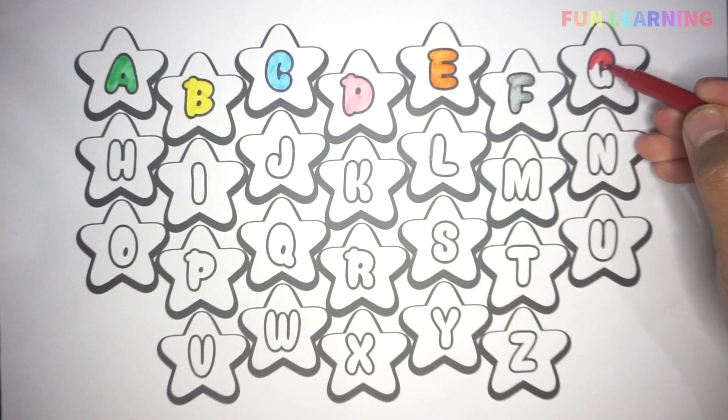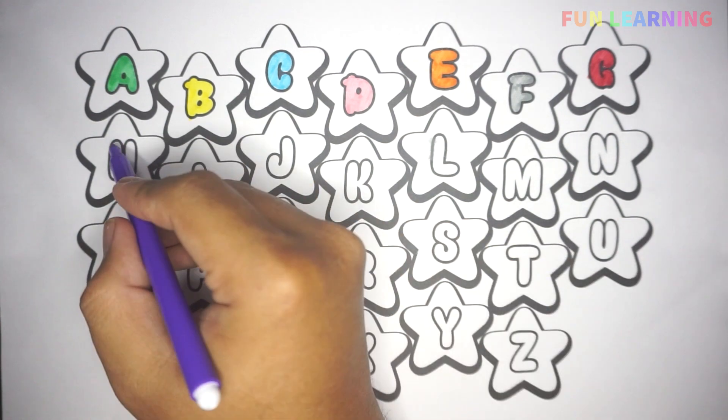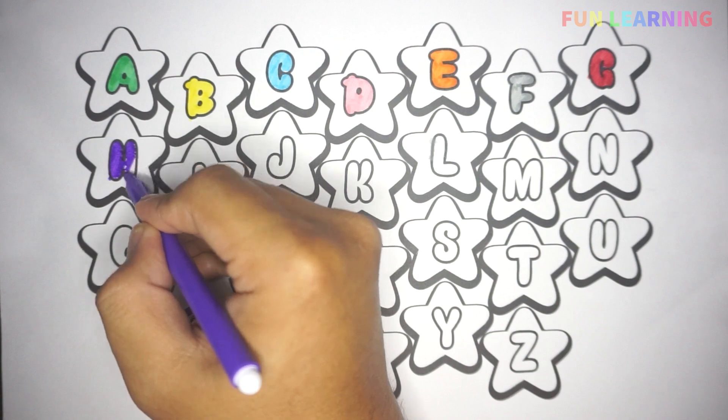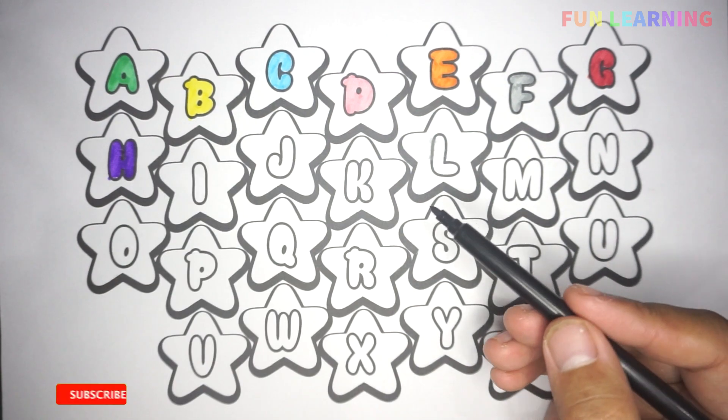G, G for goat, purple color. H, H for hand, black color.